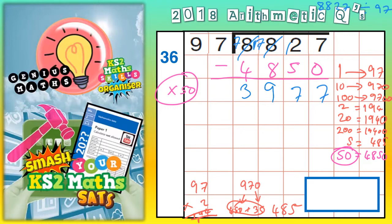3, 9, 7, 7. Now, the next biggest number we can subtract from there is this chunk of 20. So let's write times 20 at the side. And we will subtract 1940. Here we go with this chunk.